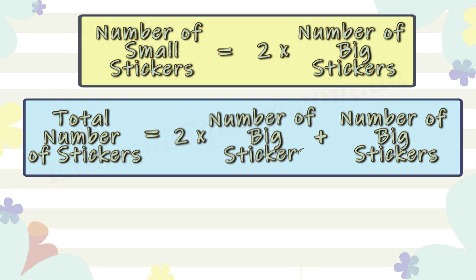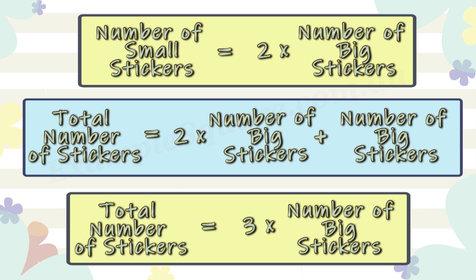The equation becomes: the total number of stickers equals 2 times the number of big stickers plus the number of big stickers, which simplifies to 3 times the number of big stickers.